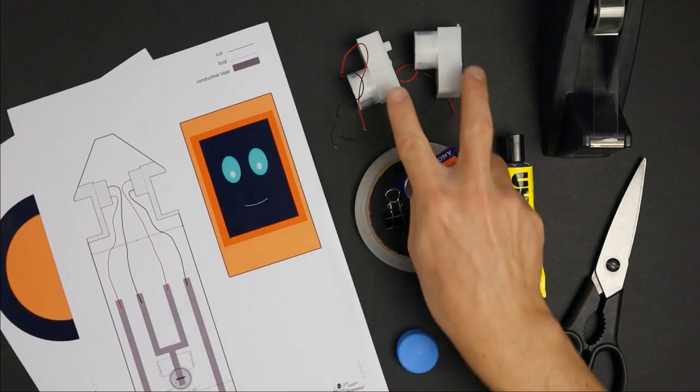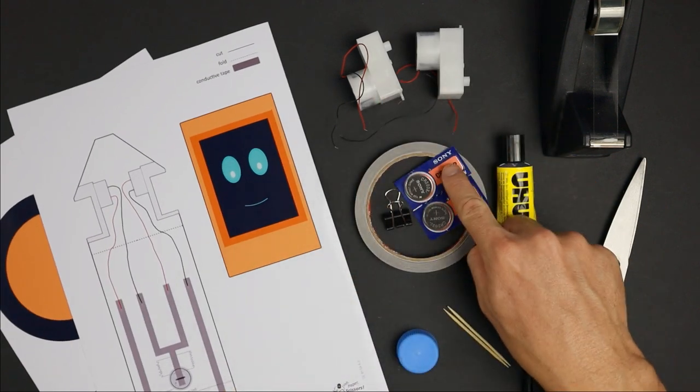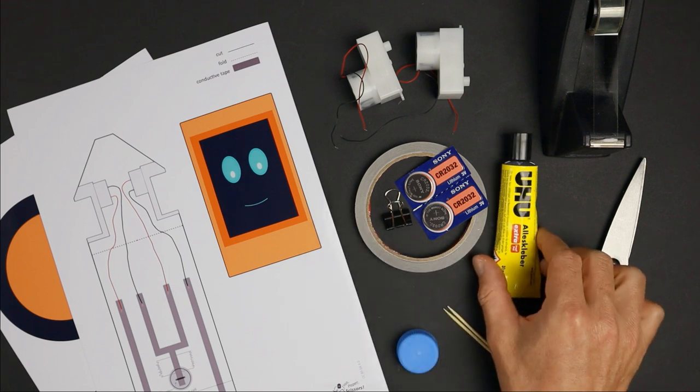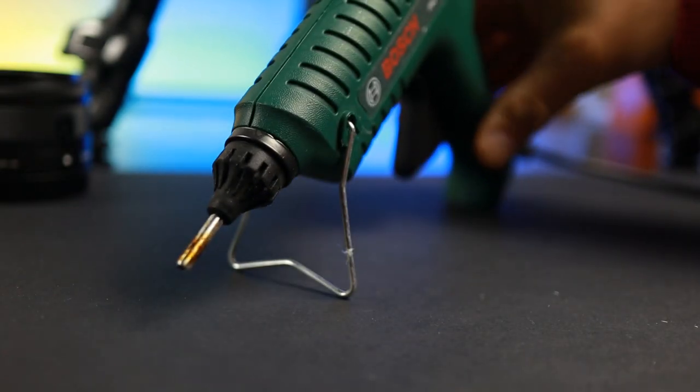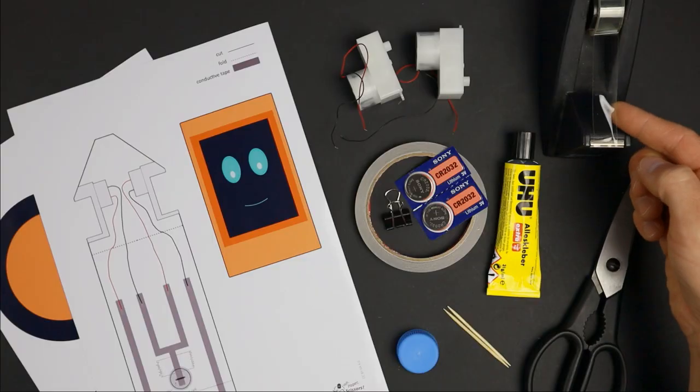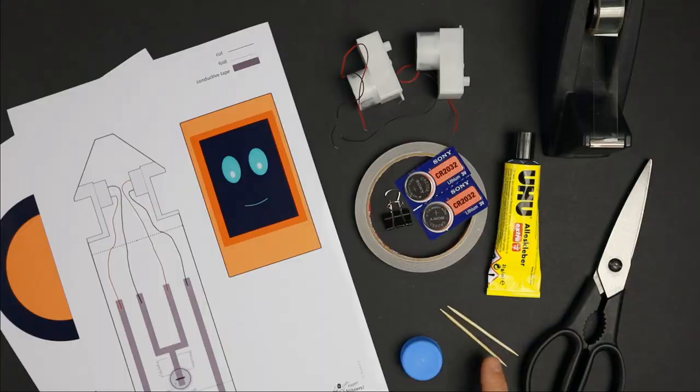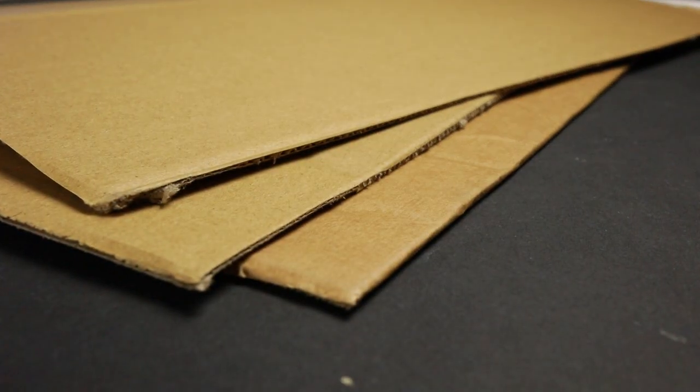For the basic robot, you need two geared solar motors, two button cells, a binder clip, conductive tape, some kind of glue. I will use hot glue in this video because it is fast. Tape, scissors, a bottle cap and toothpicks. And you will need some old cardboard. You will find a link to all the materials and templates in the video description.